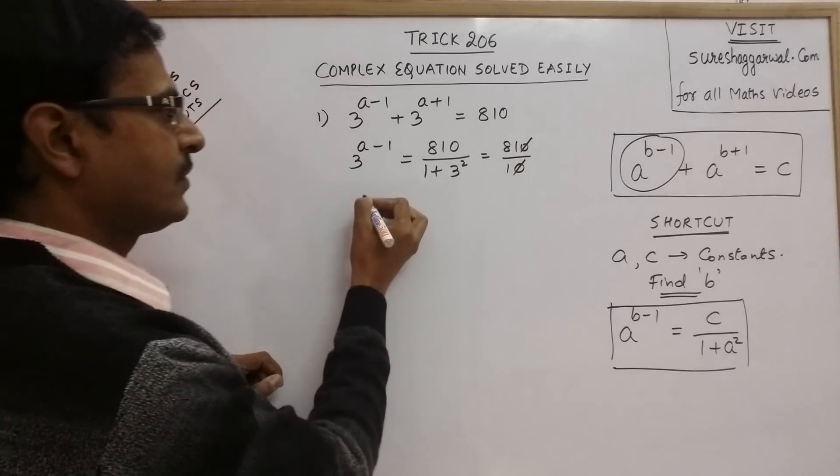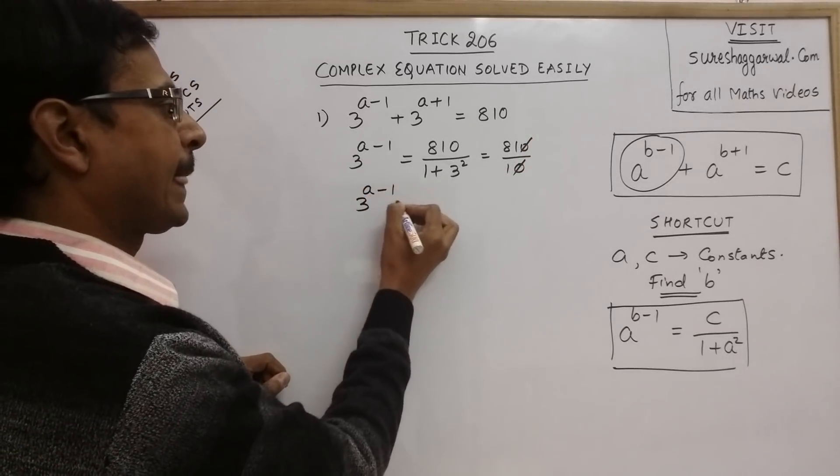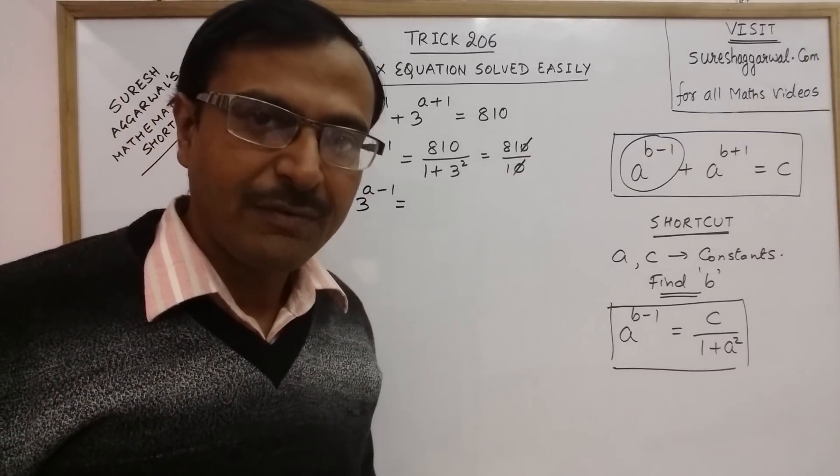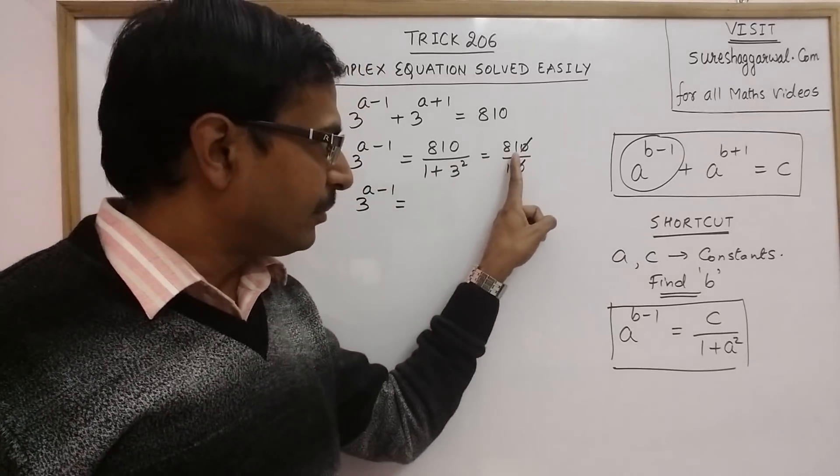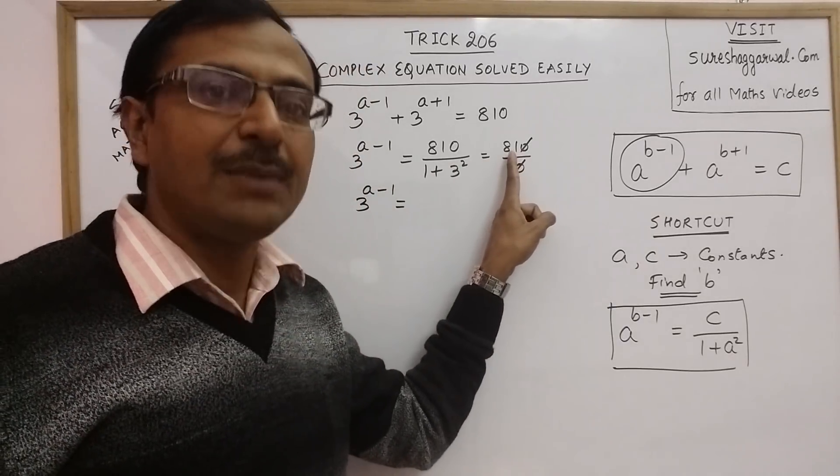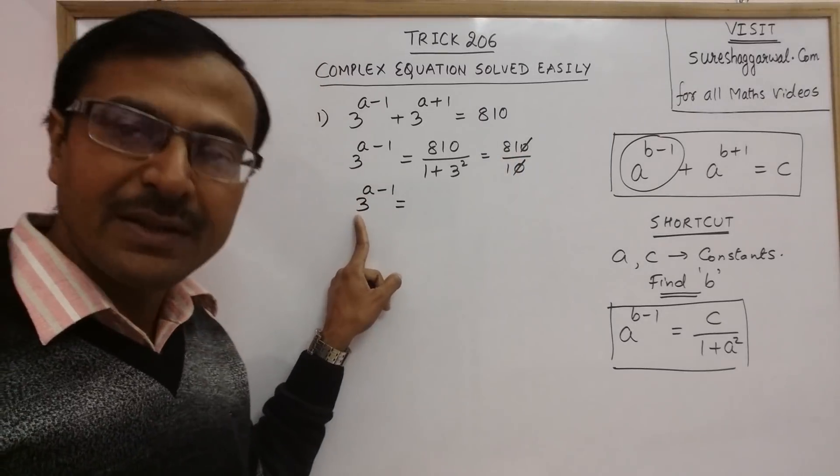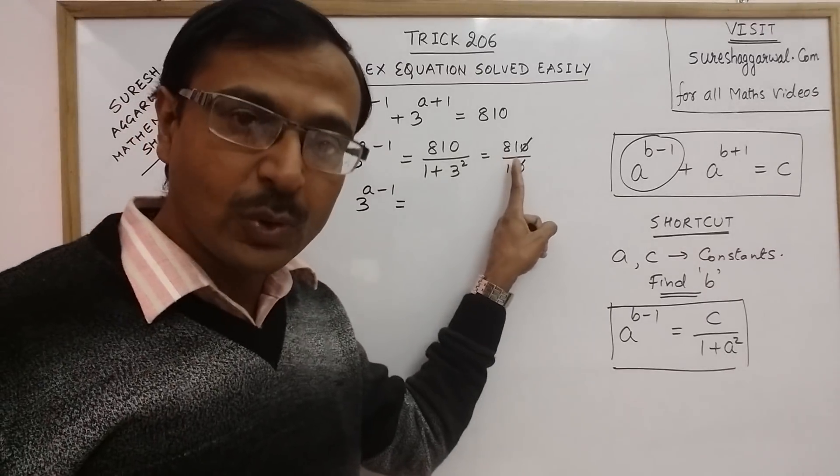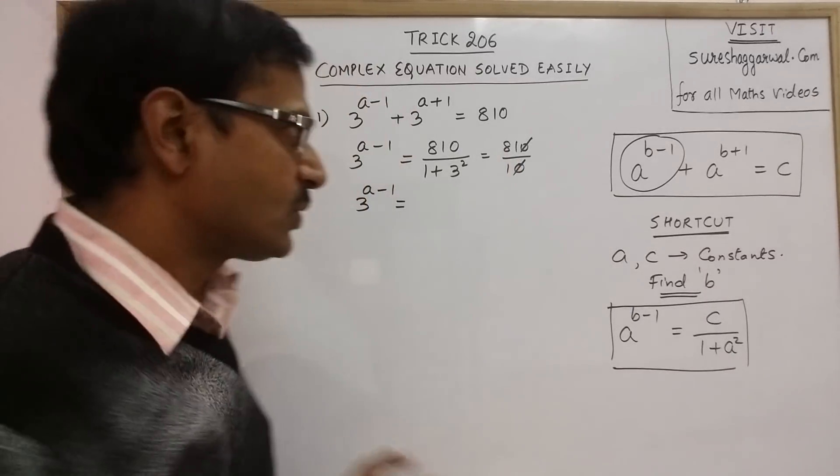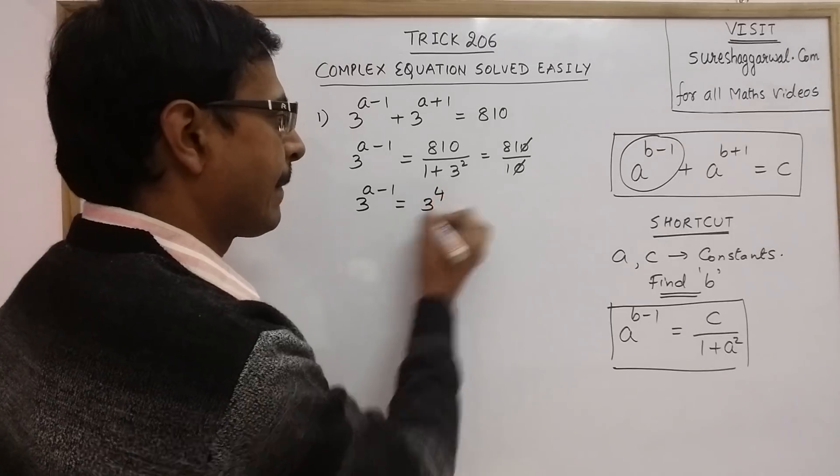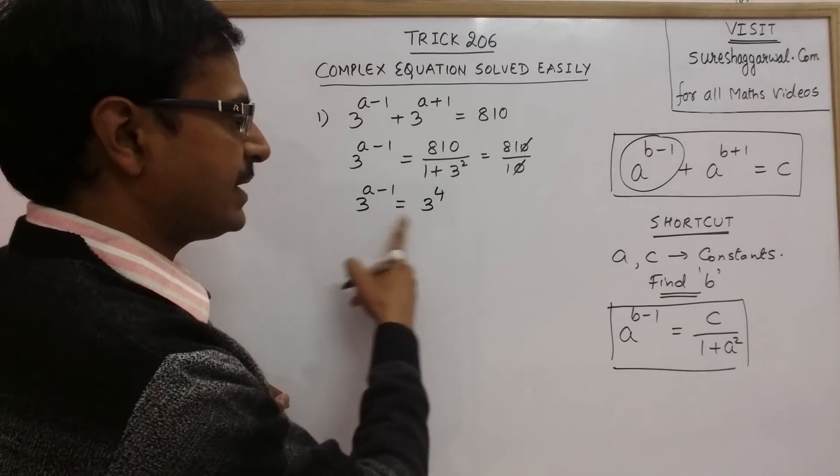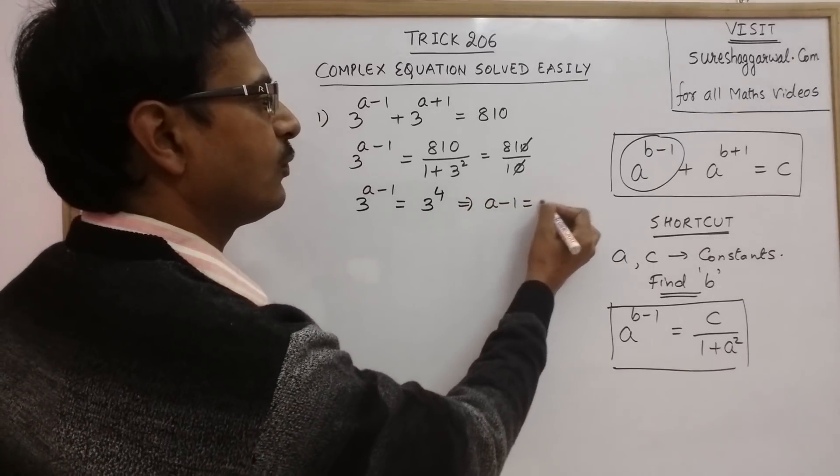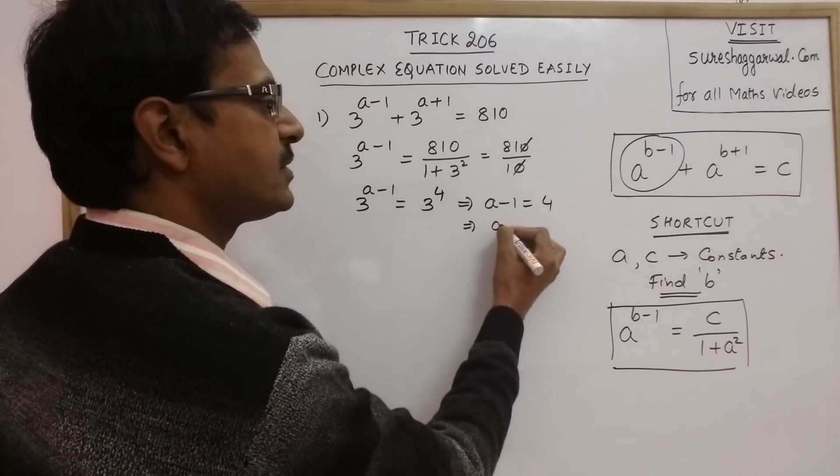So, you have 81 in the right hand side and obviously, whenever it is a simplification problem, you will have a term in the RHS which can be reduced to the same base in the LHS. So, LHS has a base 3. So, we need to reduce 81 also in powers of 3. So, we all know that 81 is 3 raise to power 4. So, whenever bases are same, you can equate the powers. So, this gives a minus 1 equal to 4. A comes out to be 5.